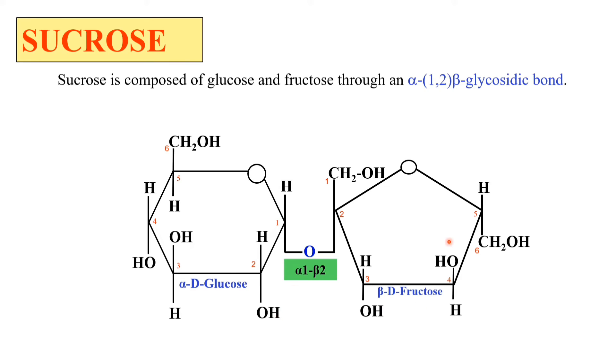Here the linkage is a 1-2 beta-glycosidic bond. This is the structure of sucrose where glucose and fructose are linked with each other by a beta 1-2 linkage.